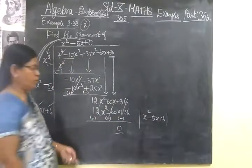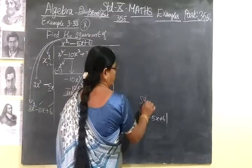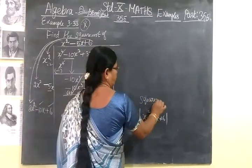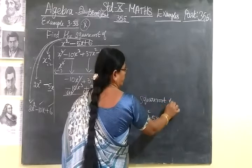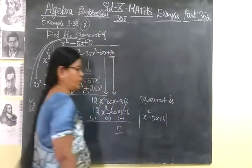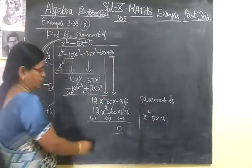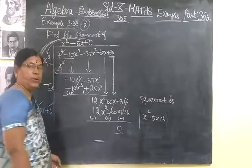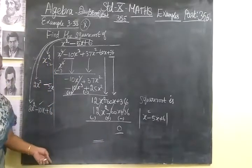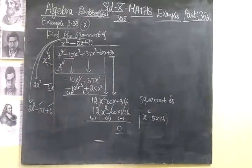Since the remainder is 0, the square root of this, the square root of the given term, is x² - 5x + 6. This is a very important question. You kindly go through it. Thanks.